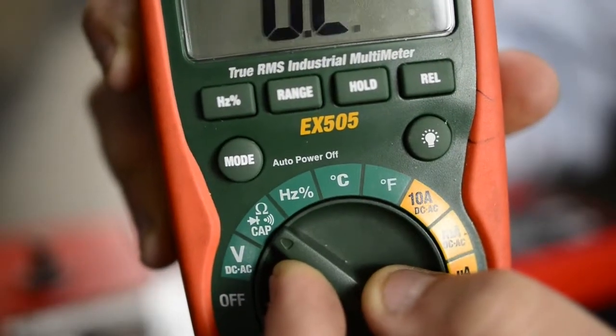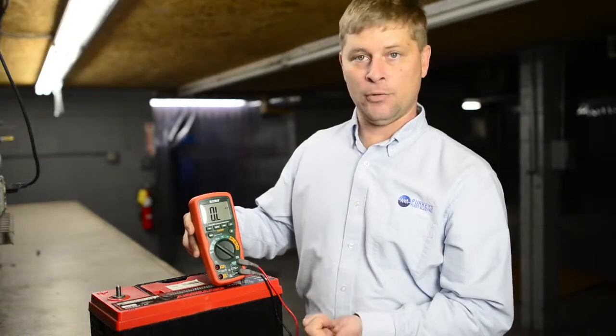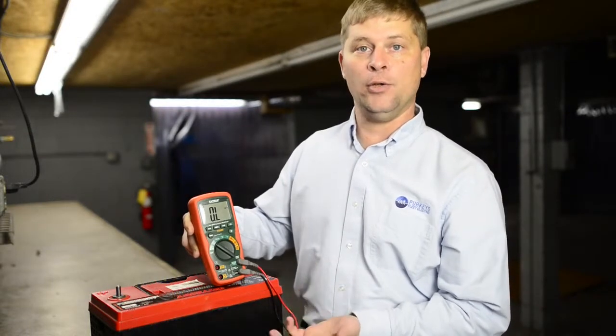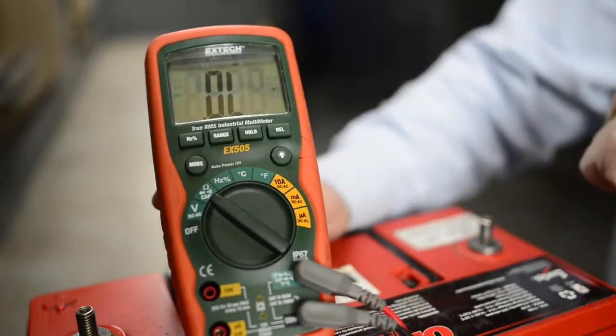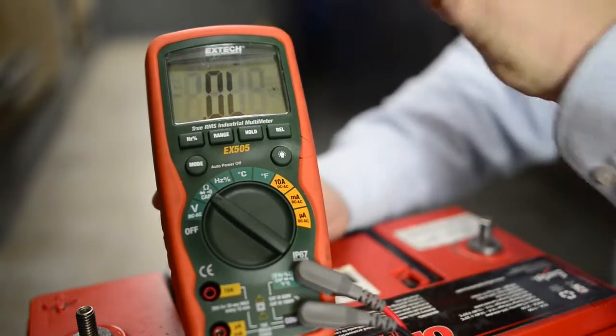The next feature on this one is we have diode check for checking a diode. We have continuity check if you're just seeing if a wire or circuit has continuity. We have ohmmeter, and we also have the ability to check a capacitor.